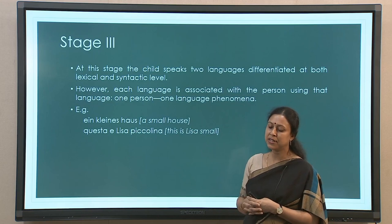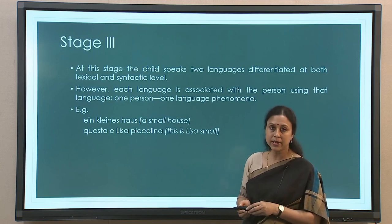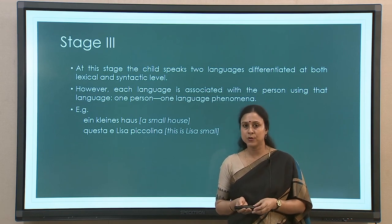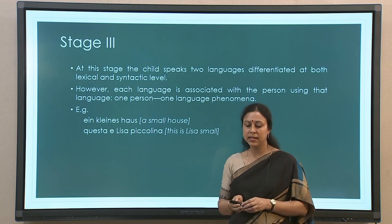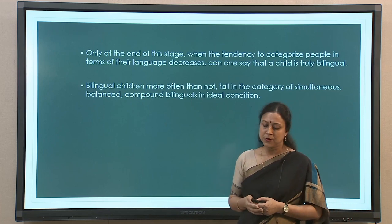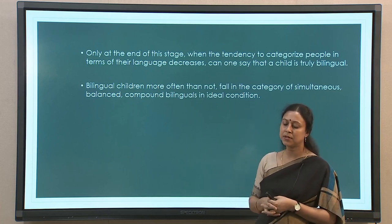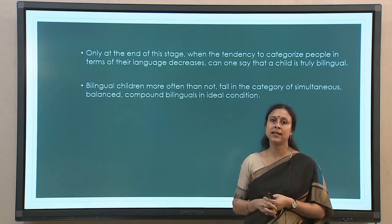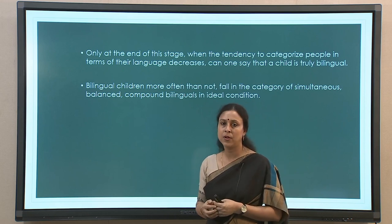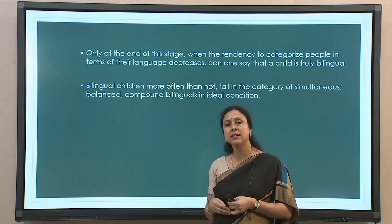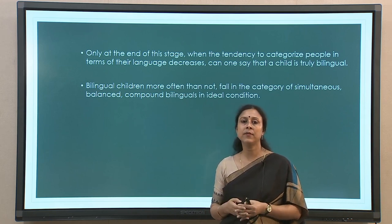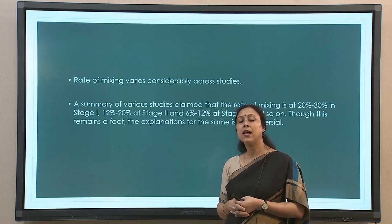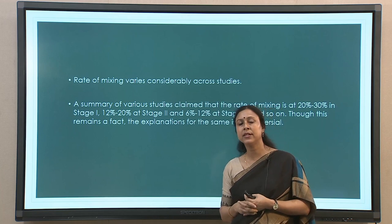At stage three, the child speaks two languages differentiated at both the lexical and syntactic level. What they do now is recognize that there are two languages, and they maintain a 'one language, one person' kind of system. In Lisa's case, she talks to her father in Italian and with her mother in German. At the end of this stage, the tendency to categorize people in terms of their language gradually changes, and when children realize that the 'one language, one person' formula does not always work, they get more generalized in their ideas about language and its use — that is when researchers agree the child has truly become a bilingual.